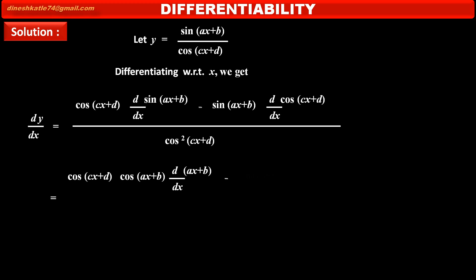Minus sin(ax + b) as it is, into derivative of cos(cx + d), that is minus sin(cx + d), by chain rule.